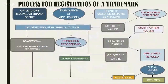For trademark registration, you file an application that undergoes examination. If objections are raised and your response satisfies them, it is published in a journal. If not, you can attend a show cause hearing. Once published, there is a four-month opposition window during which anyone can oppose the trademark. Opposition proceedings involve evidence and hearing, after which either registration or refusal is decided.